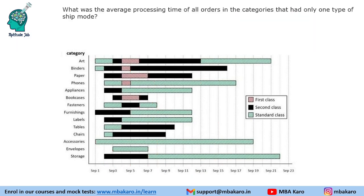Next question: What was the average processing time of all orders in the categories that had only one type of ship mode? Looking at the graph, only accessories and envelopes have one type of ship mode. Accessories runs from day 1 to day 19, giving a processing time of 18 days. Envelopes runs from day 3 to day 7, giving a processing time of 4 days. The average of 18 and 4 is 11.